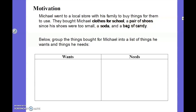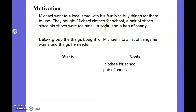Now we're going to take those things and put them into groups. Clothes — he needs clothes, so we're going to put that under needs. The next thing was a pair of shoes, and it said his shoes were too small, which meant he definitely needed a new pair. A soda would be a want because that's something you desire — your body doesn't really need it, it really just needs water. And a bag of candy we're going to put under wants because we want candy but we don't need it.